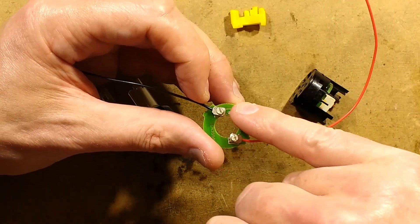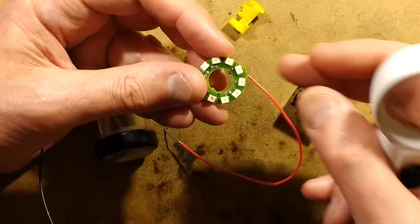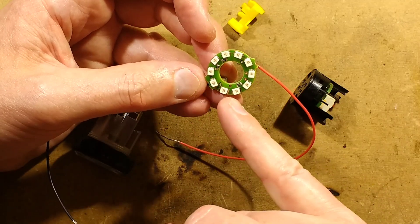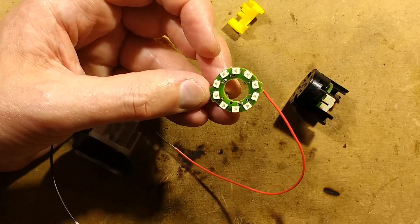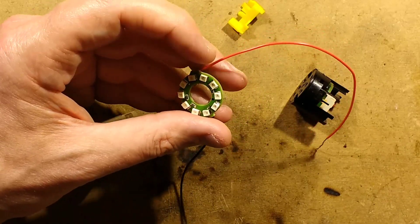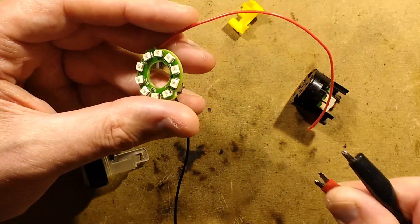Yeah, it's a double-sided board and it's got a track coming from the positive and negative going through two plated through holes here and then just looping around all the LEDs, just cutting through the resistors in the process. They are all in series. That's quite neat. Shall we try it while it's out the thing? Although really a circle of LEDs isn't going to be that exciting, but let's give it a go anyway.